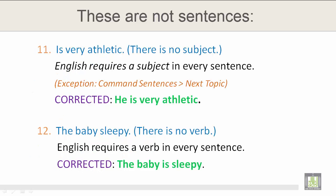Number 11: Is very athletic. There is no subject. English requires a subject in every sentence. An exception is command sentences. The corrected version of number 11 is: he is very athletic — and 'he' is the subject.